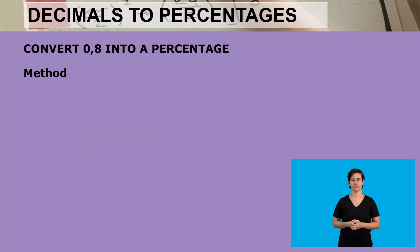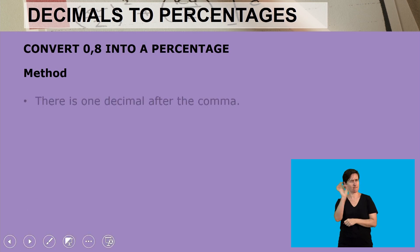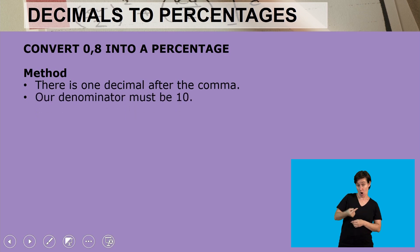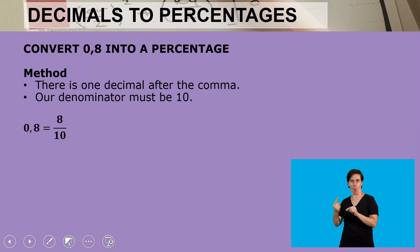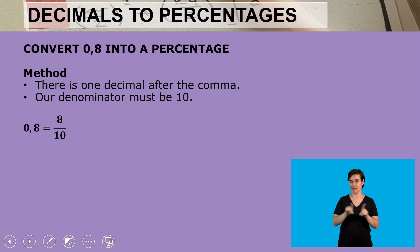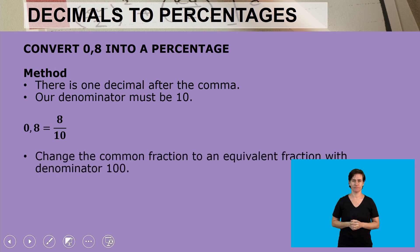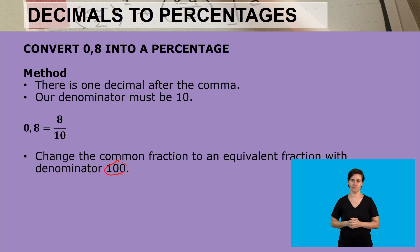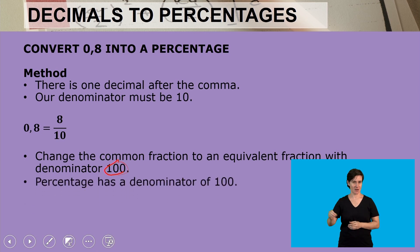Our first decimal is 0.8 and we are to convert it into a percentage. Here's the method. There is only one decimal after the comma, so our denominator must be 10, so it will be 0.8, which equals 8 tenths. Because we are looking for a percentage, it is important that our denominator becomes a hundred, so we must change the common fraction into an equivalent fraction with a denominator of a hundred, because the percentage is out of a hundred.